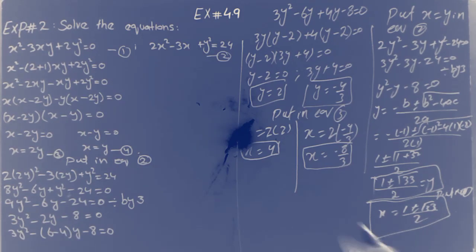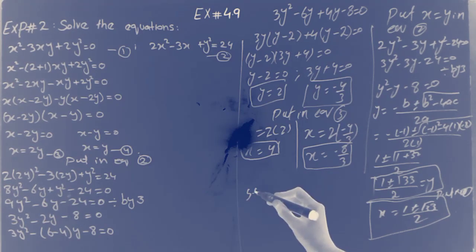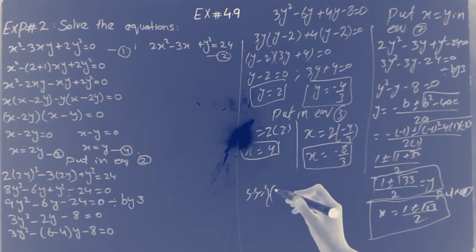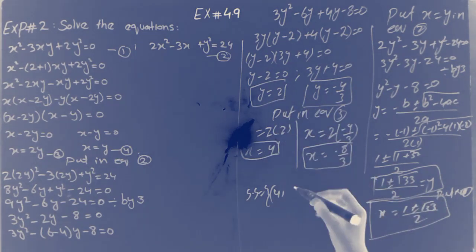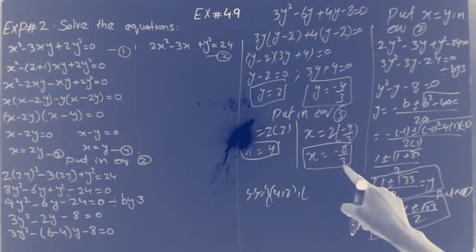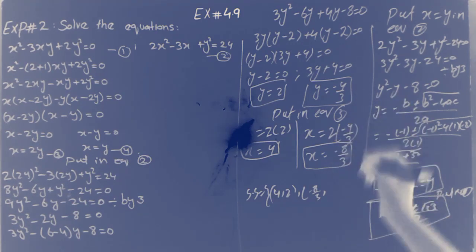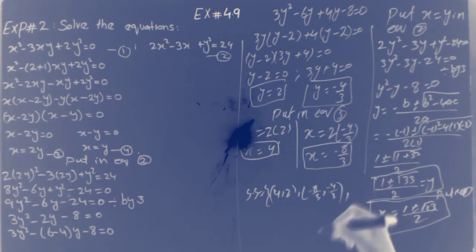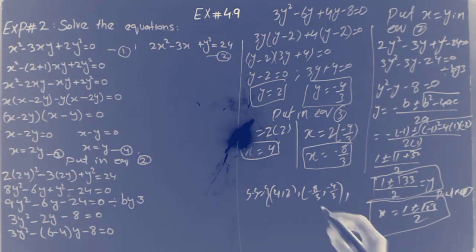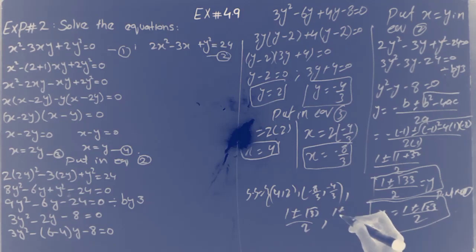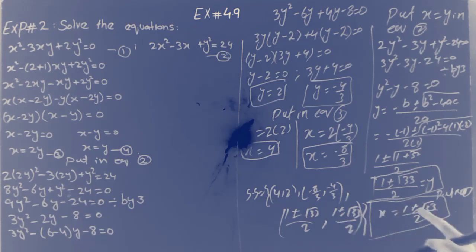Writing the solution set: x = 4 and y = 2; x = −8/3 and y = −4/3; and x = y = (1 + √33)/2 or x = y = (1 − √33)/2. Example 2 is solved; next time we will do example 3.